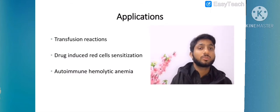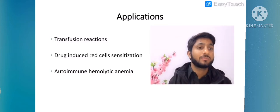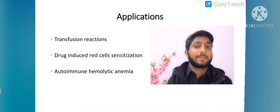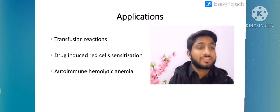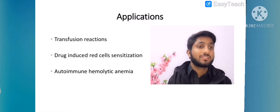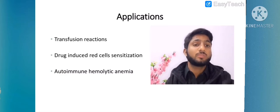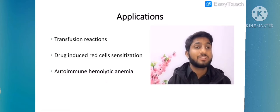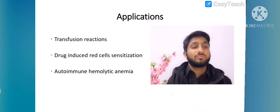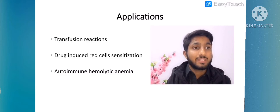Applications: we use anti-human globulin to overcome transfusion reactions and for drug-induced red cell sensitization. Anti-AHG protein is also used for autoimmune hemolytic anemia, where autoimmune reactions cause the body to produce autoantibodies against abnormal RBCs. For detection of autoantibodies, we use anti-AHG protein.